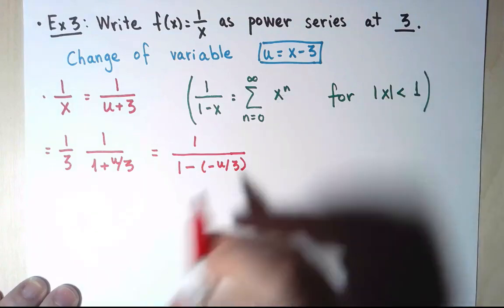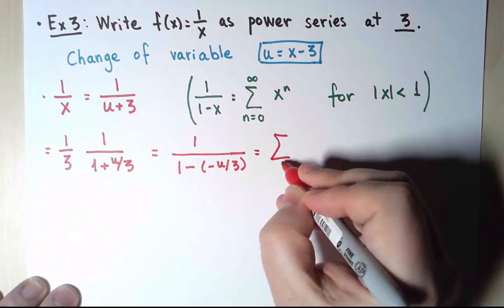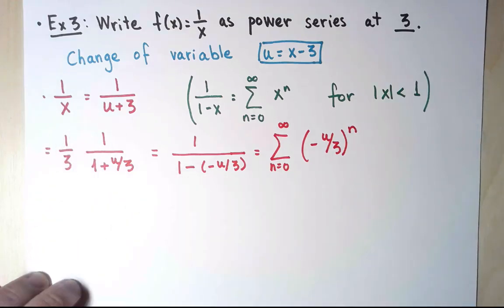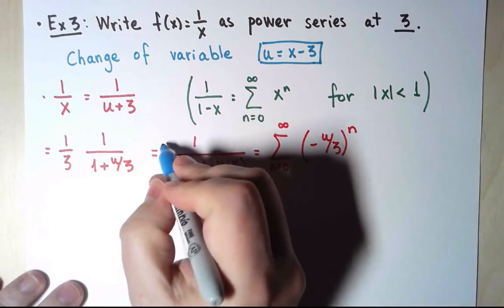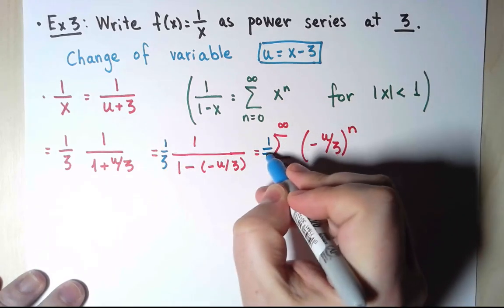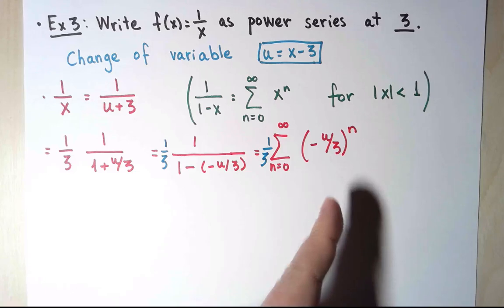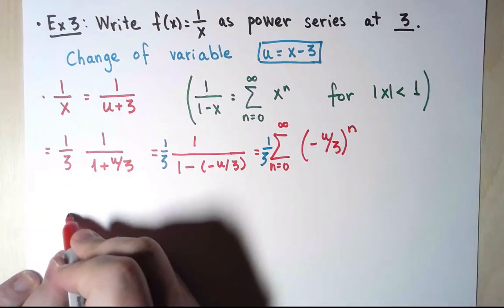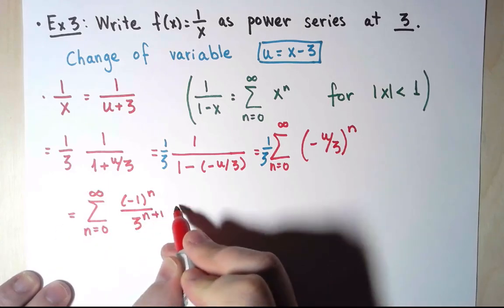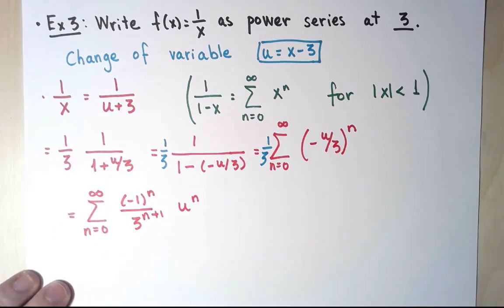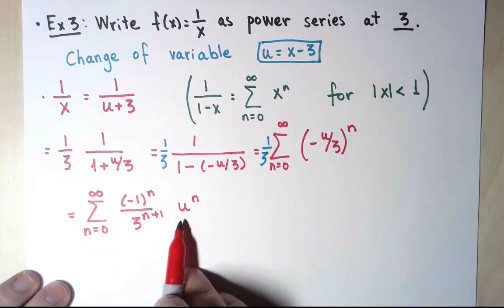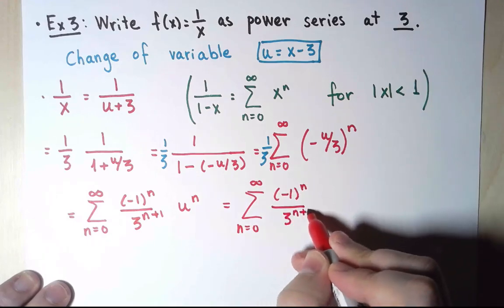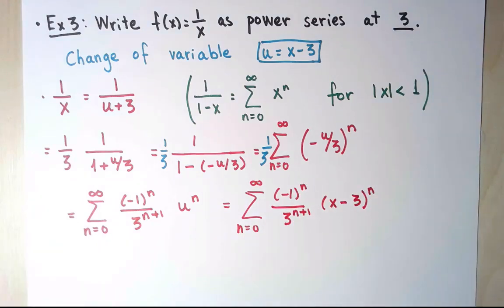So instead of x, I have to write minus u over 3. And I have been forgetting that I have an extra 1 over 3 all the time. So let me make sure I carry it. There is a 1 over 3 here, and there is a 1 over 3 here. And now this does look like a power series. I'm going to separate the minus 1, I'm going to enter this 3 into the sum. And finally, since I've done the hard part, I'm going to undo the substitution. And instead of powers of u, I will have powers of x minus 3.